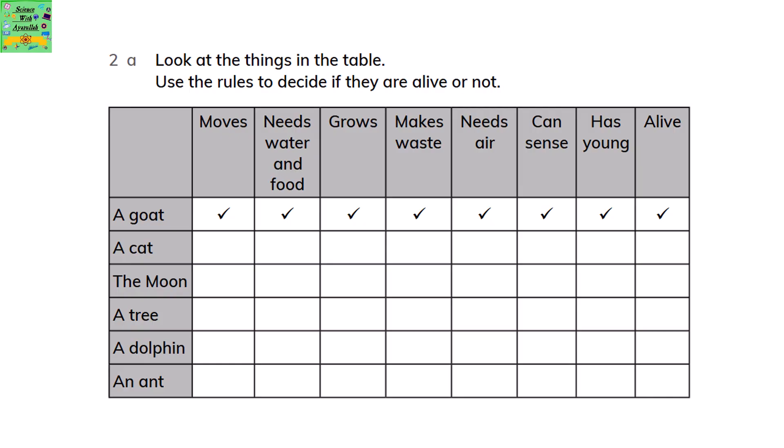A goat, it can move, it needs water and food, it grows, it can make waste, it needs air, it can sense the things around it. It has young or it gives birth to its young ones. So it means that they are alive.